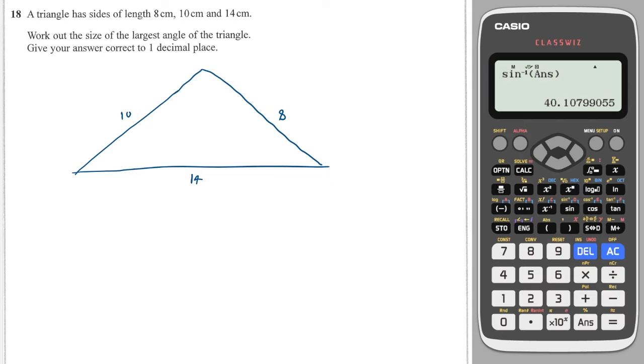The largest angle will be the one opposite the largest side because 14 is the largest side so it spreads the other two sides out the furthest. So this is going to be the longest side so I'm going to call that one capital A, this one little a which means these two could be B and C.